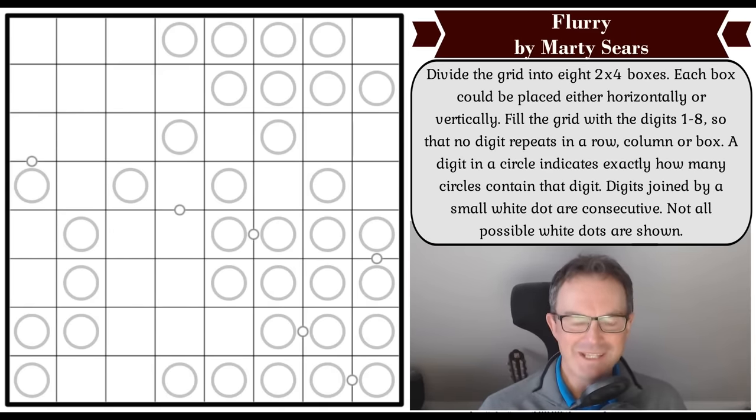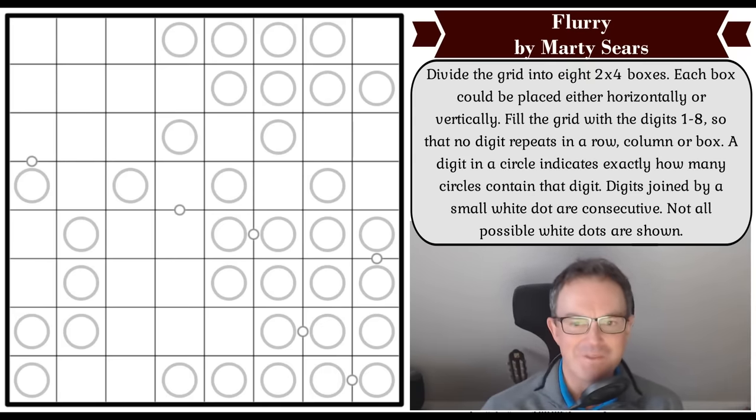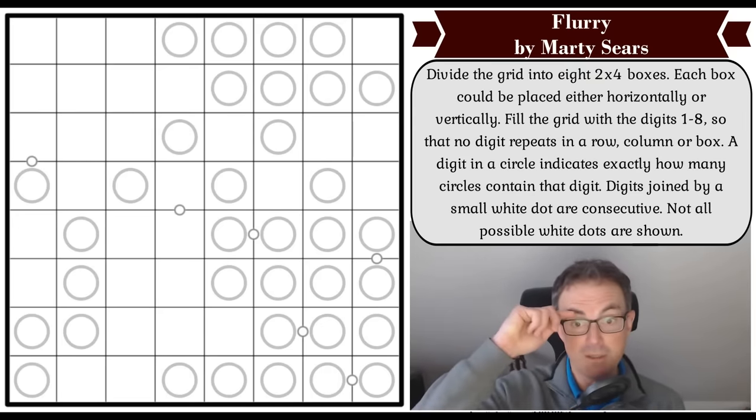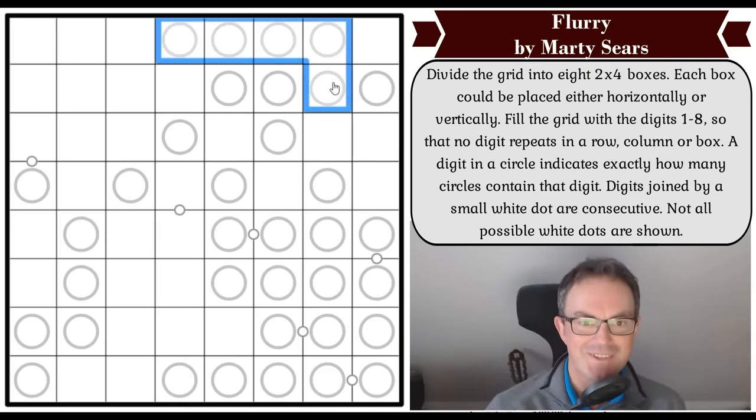Hello and welcome to Friday's edition of Cracking the Cryptic. No week in Sudoku could really be considered complete unless you do a puzzle by Marty Sears. That is what we're going to be trying to do today, a puzzle called Flurry, which has generated a flurry of recommendations, even though it's only got two stars out of five for difficulty. It features Marty's favourite constraint, the circle.